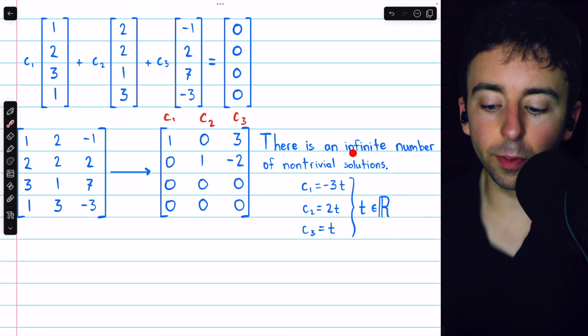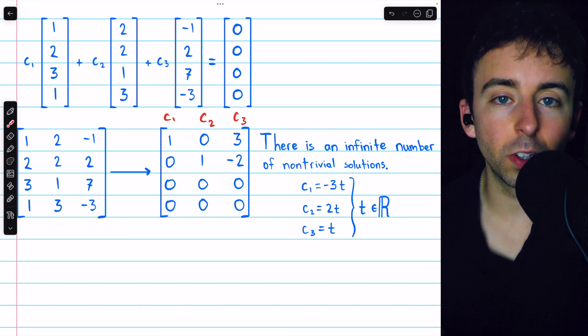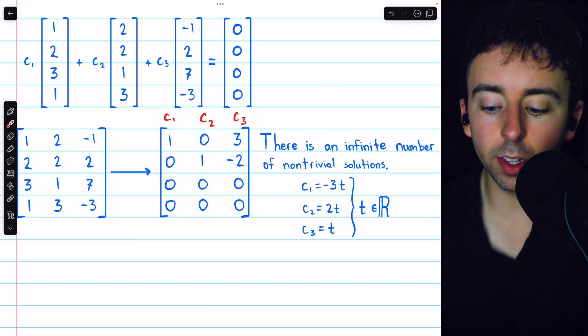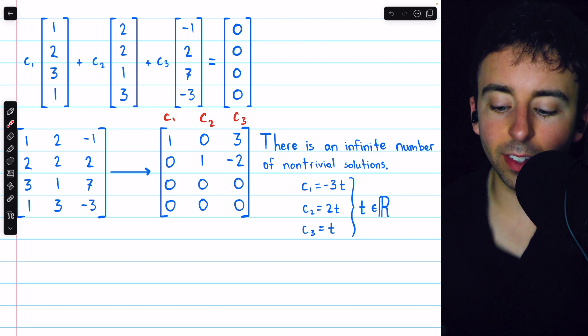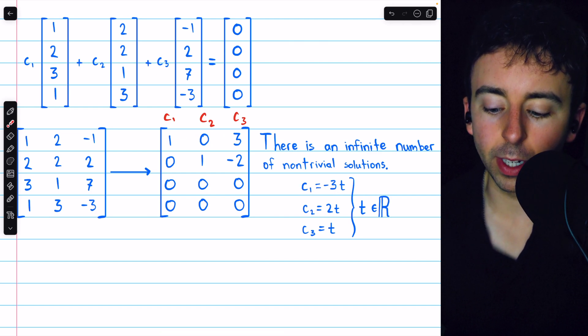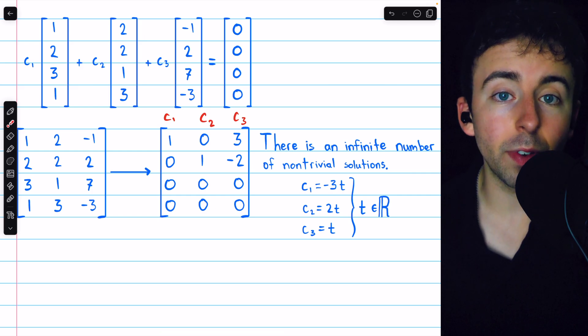In fact, there's an infinite number of non-trivial solutions. Since C3 is free, we could set it equal to an arbitrary parameter t, and then from row 2, we'd have that C2 is equal to 2t. From row 1, we'd have that C1 is equal to negative 3t, and so for any value of t, we could find a solution to the equation.